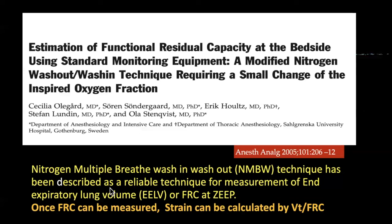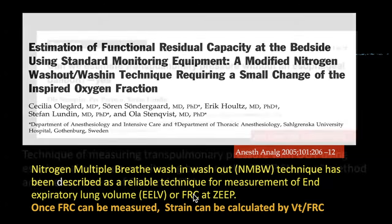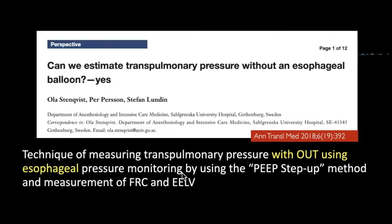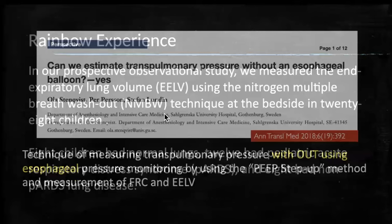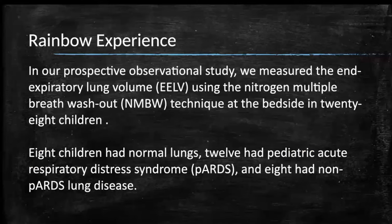New techniques have emerged: the nitrogen multiple-breath washout technique is described as a reliable method for measuring end-expiratory lung volume or FRC at zero end-expiratory pressure. Once FRC is measured, strain can be calculated as tidal volume / FRC. In 2018, Holastingquist proposed a PEEP step method to measure stress without esophageal pressure monitoring.